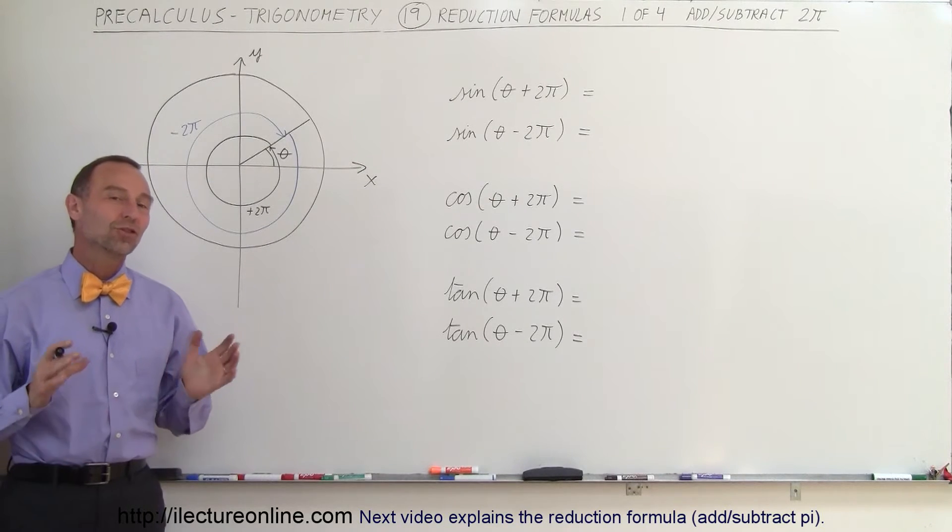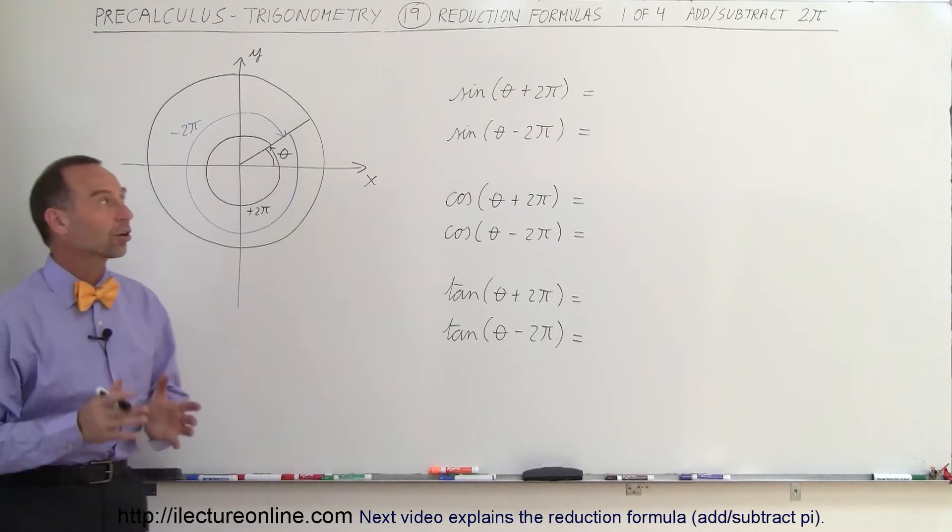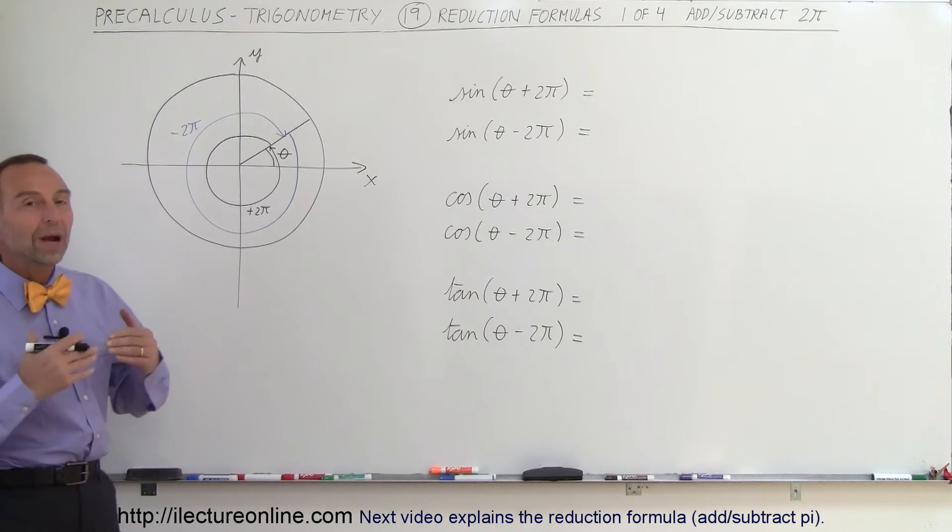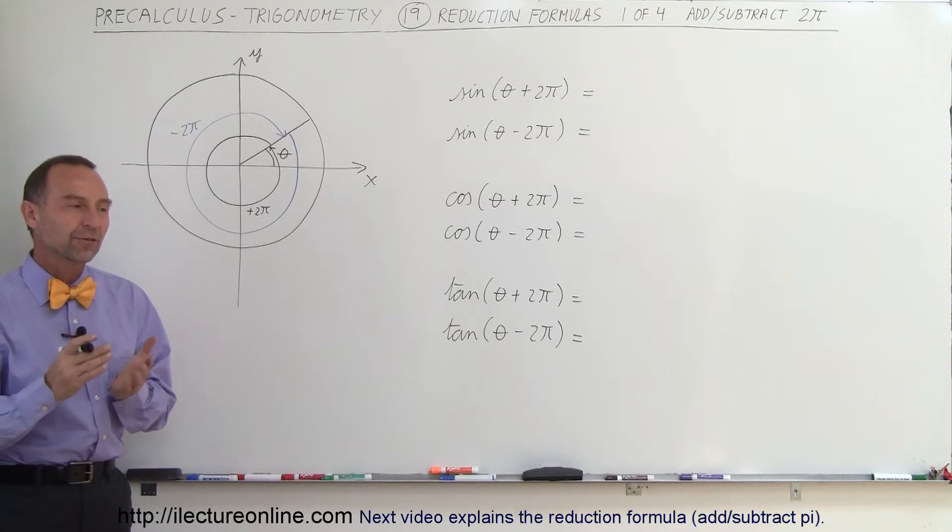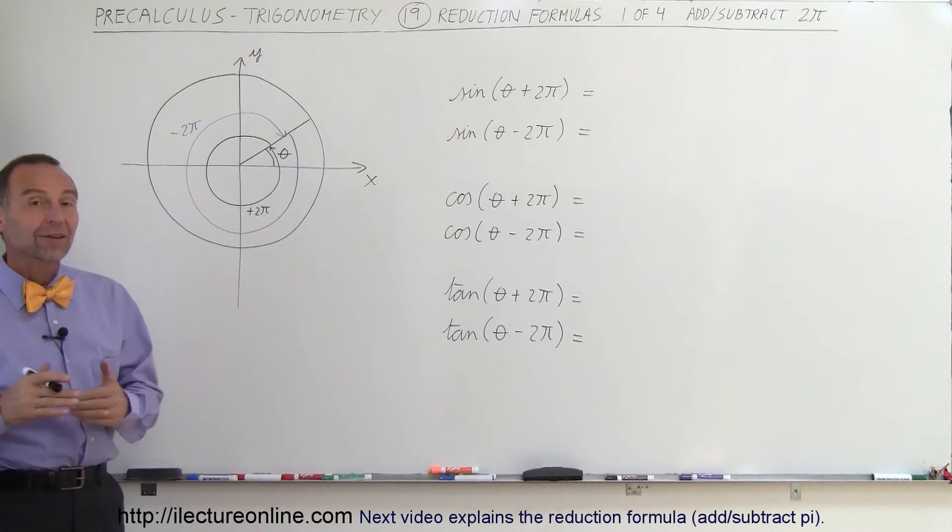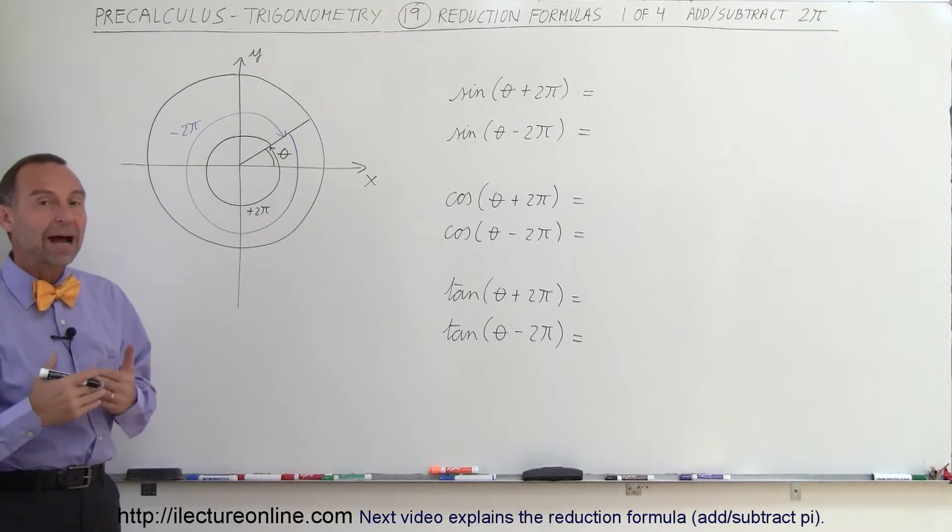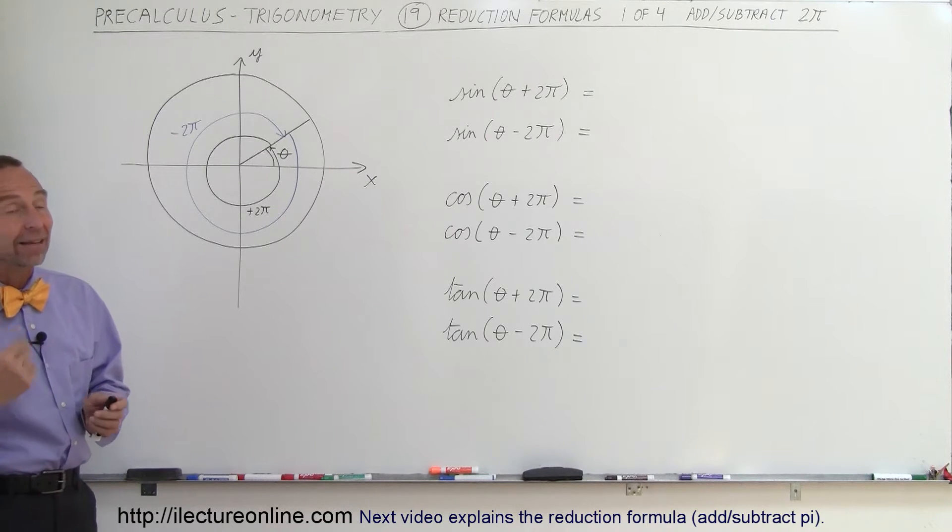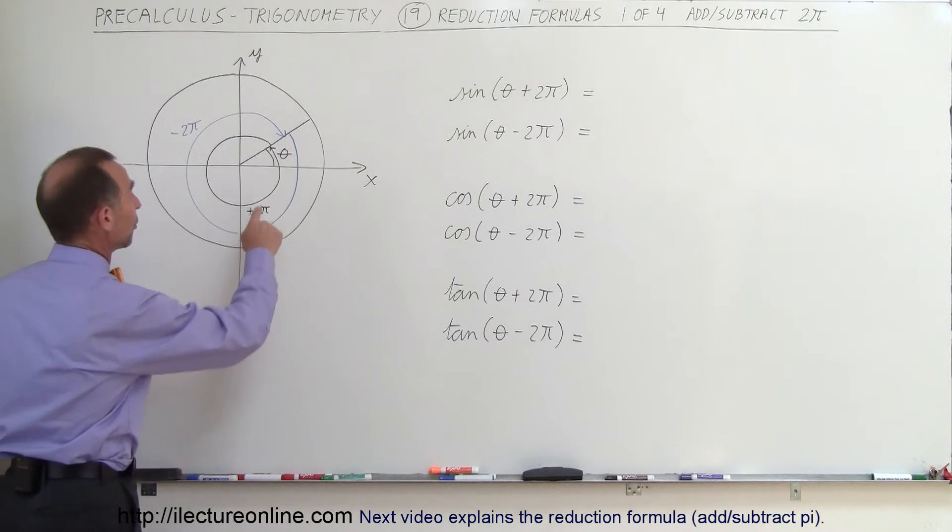Welcome to Lecture Online. We want to generalize what we call reduction formulas, ways in which we can reduce trigonometric functions to a more simple form. The first one we want to look at is to be able to add and subtract 2π from any angle and get the exact same result. That seems pretty straightforward.